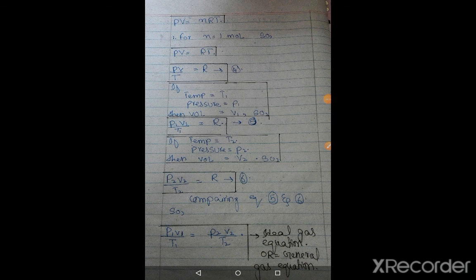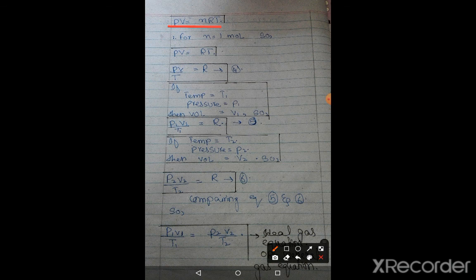This equation, friends, we have made: PV is equal to nRT, where n is number of moles, R is universal gas constant, T is temperature, P is pressure, and V is volume.